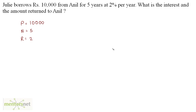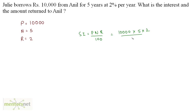Now let's calculate the simple interest. Simple interest equals P times N times R upon 100. P is 10,000, N is 5, R is 2, divided by 100. The two zeros cancel out, giving us 500 times 2, which is 1,000 rupees. So this is the simple interest.